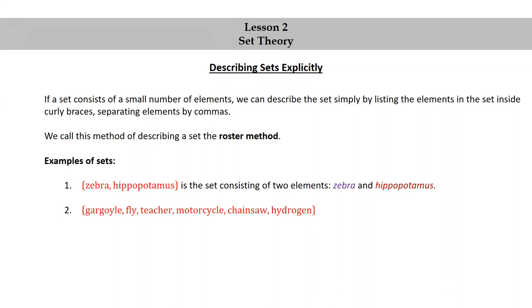The set of gargoyle, fly, teacher, motorcycle, chainsaw, hydrogen is the set consisting of six elements: gargoyle, fly, teacher, motorcycle, chainsaw, and hydrogen.